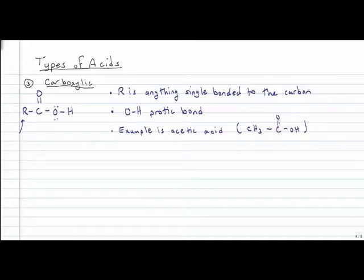And then we've got our carbon double bonded to an oxygen and then single bonded to an OH. And our protic bond is right here once again. And if you take a good look at this, the protic bond is OH again. So carboxylic acids and the oxoanions all share the same type of protic bond.